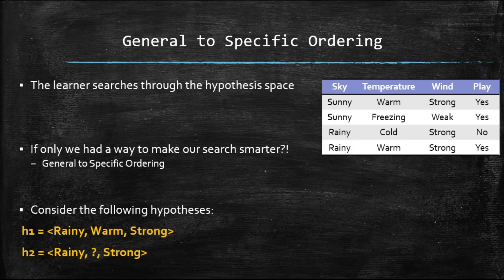In order to clarify this more, consider these two hypotheses. H1 says, I want rainy for sky, warm for temperature, and strong for wind. And H2 says, I want rainy for sky, I don't care about the temperature, and I want strong for wind.